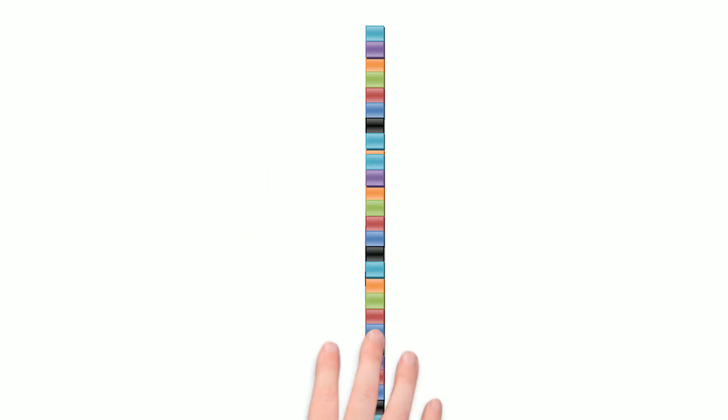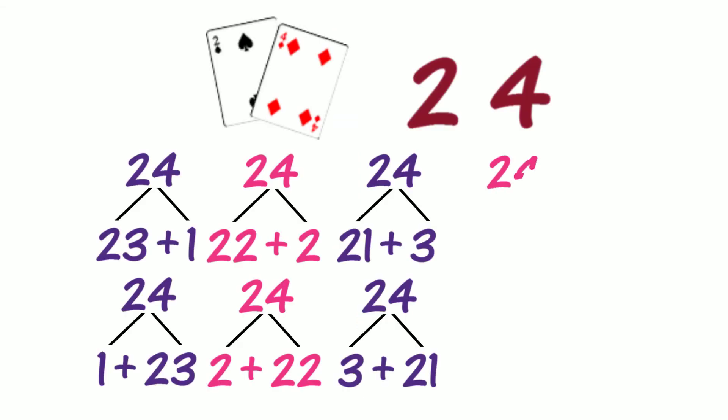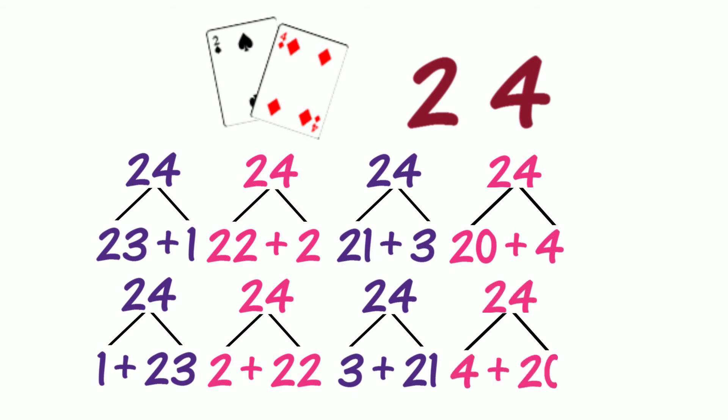Let's put our tower of 24 back together again. How else could we partition 24 into two parts? Could we partition 24 into 20 and 4? Let's record our partition. If our parts swap places, what other partition do we know? Do we know 4 and 20? Did we partition 24 into tens and ones? Yes, we did partition 24 into tens and ones. This partition does use place value — standard place value.